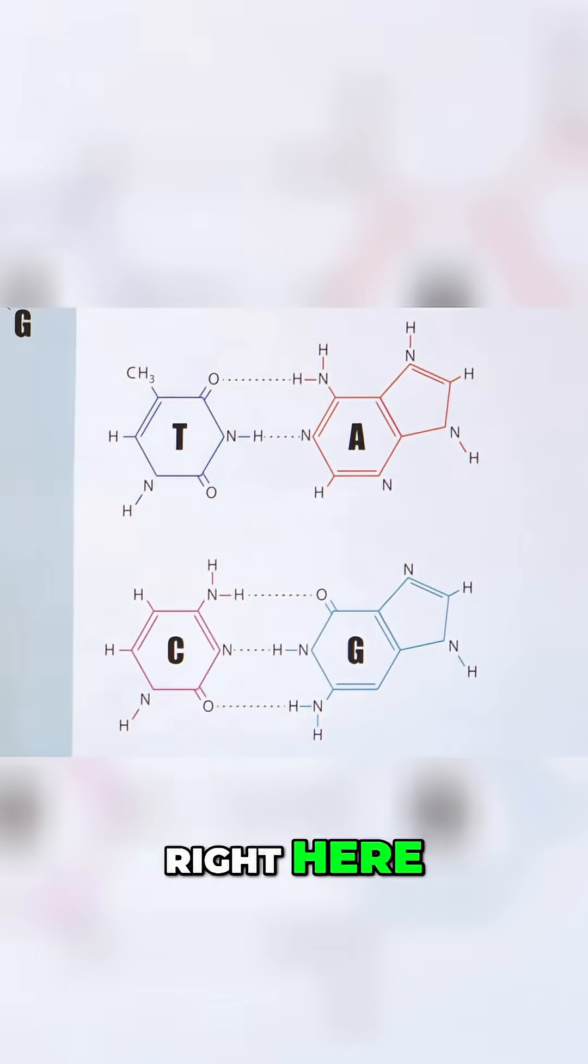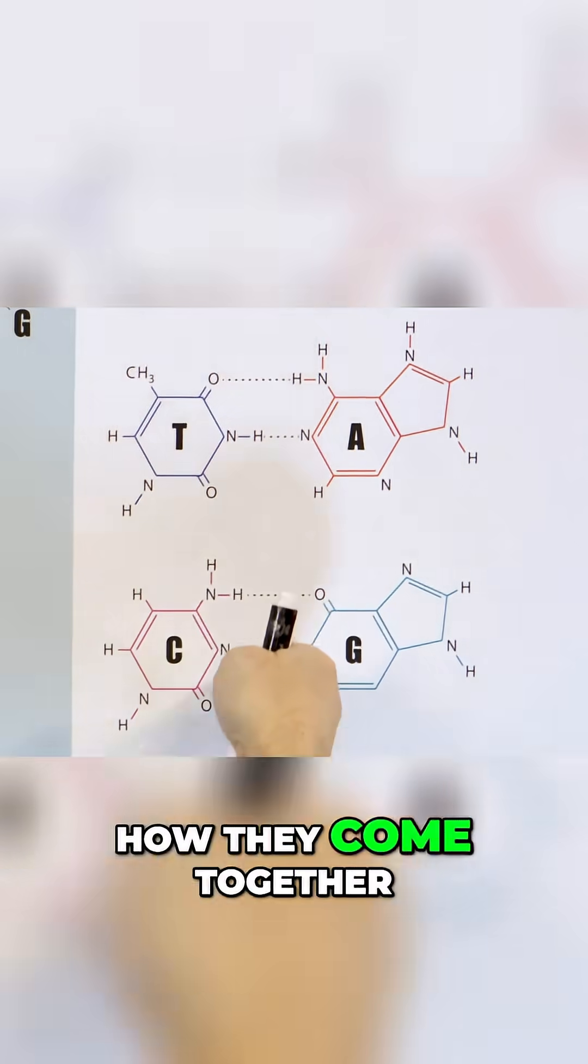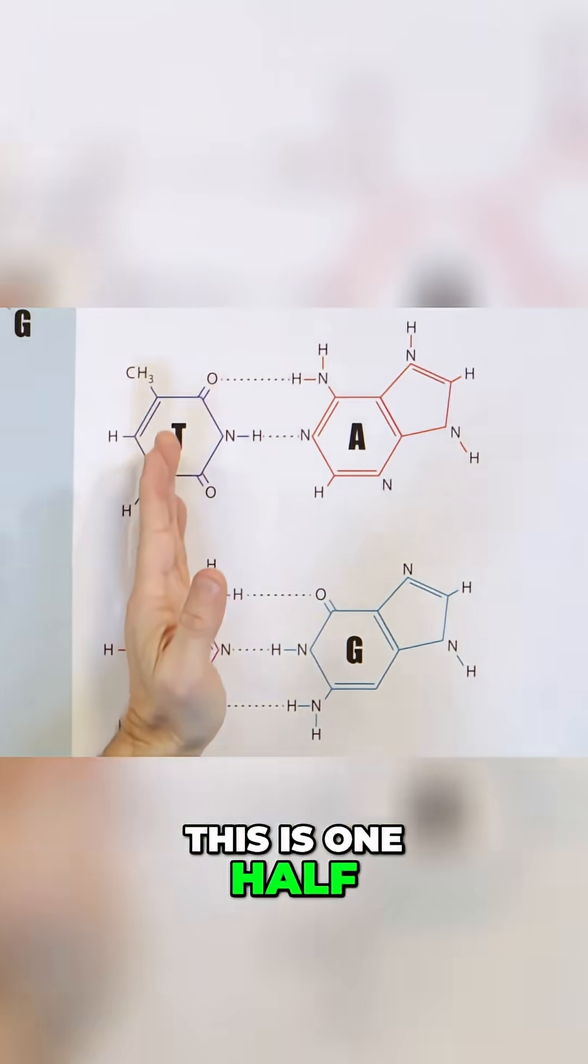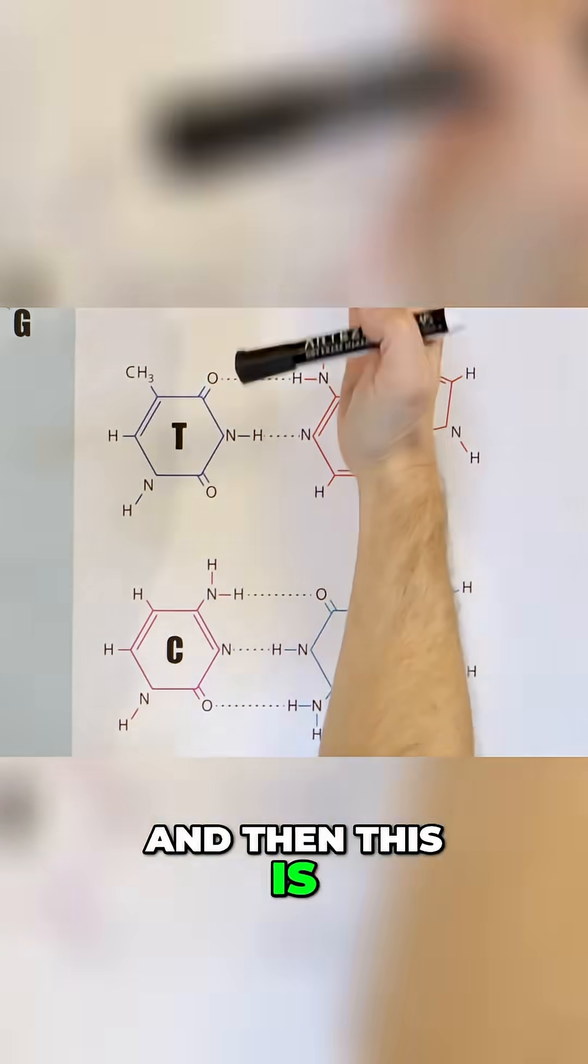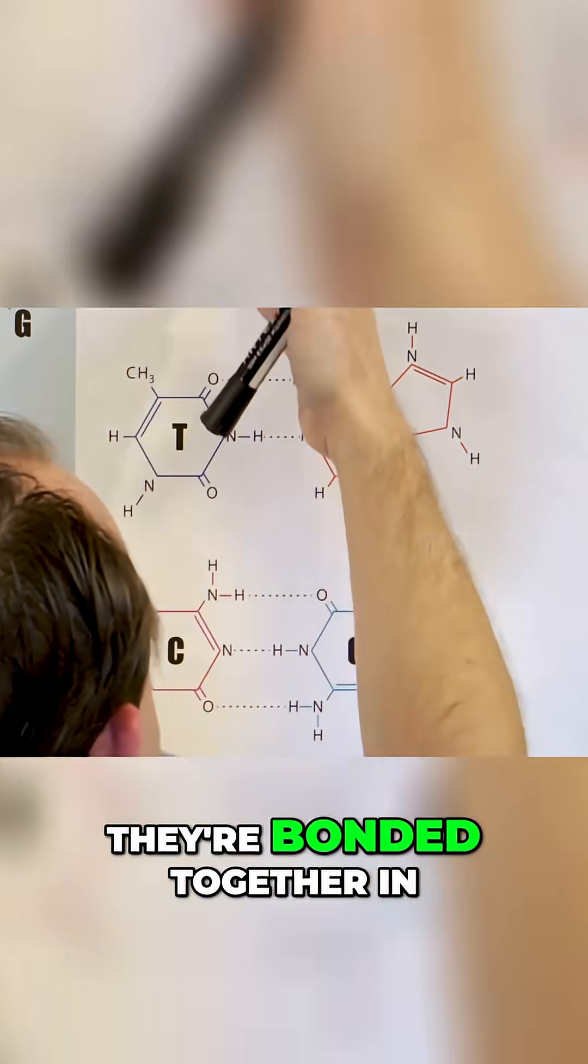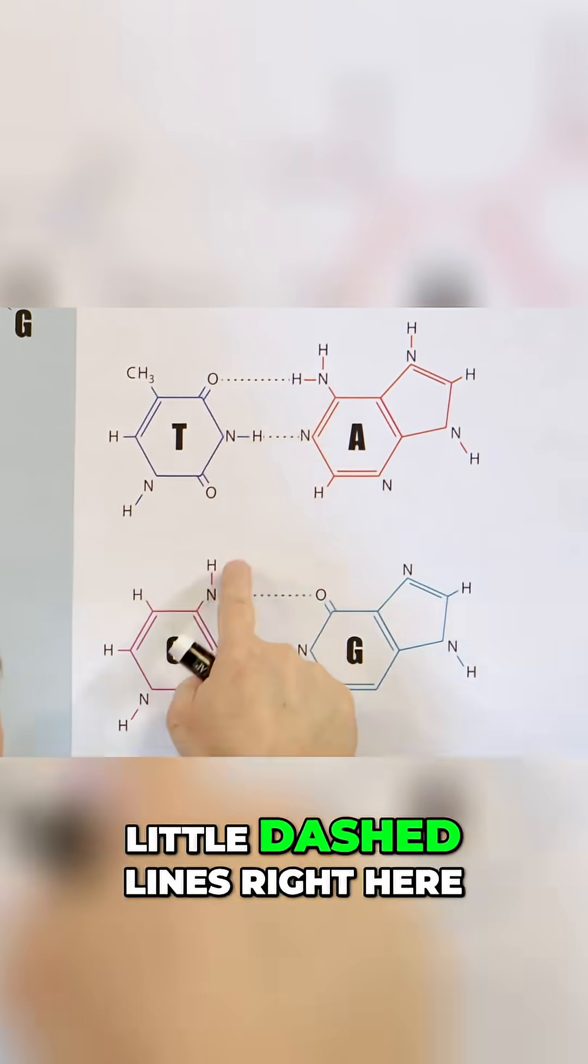We don't need to dive into the details right here, but what I want you to notice is how they come together. This is one half of the DNA molecule, and then this is the other half of the DNA molecule, and they're bonded together in the middle with these little dashed lines right here.